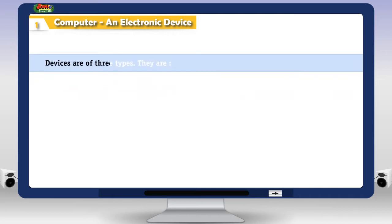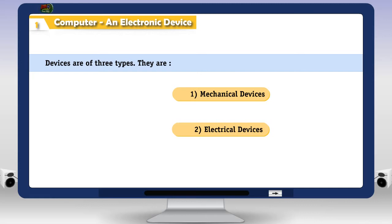Devices are of three types. They are 1. Mechanical devices. 2. Electrical devices. 3. Electronic devices.